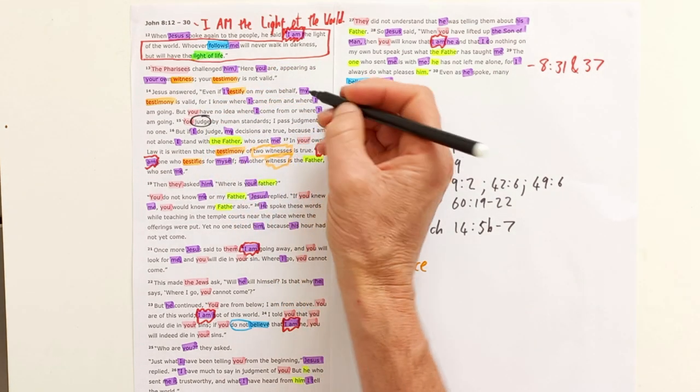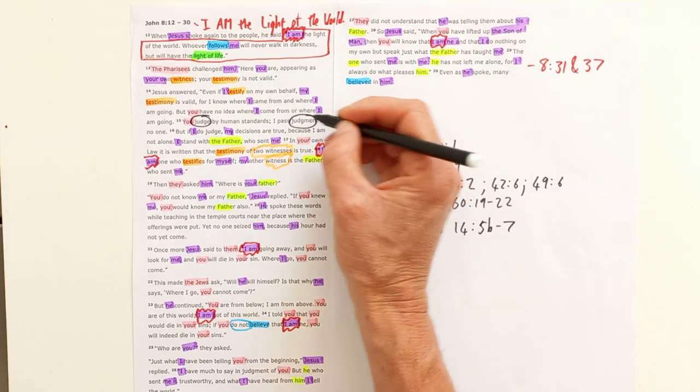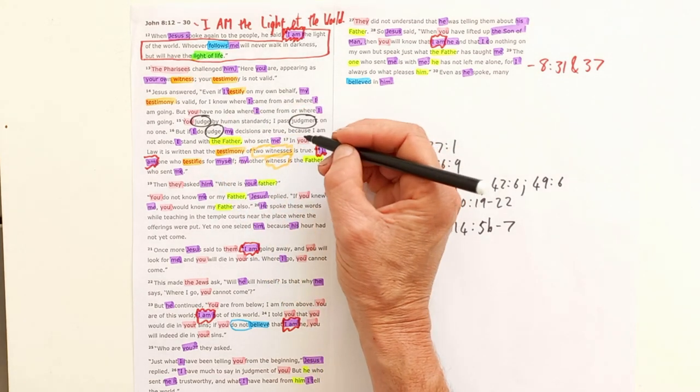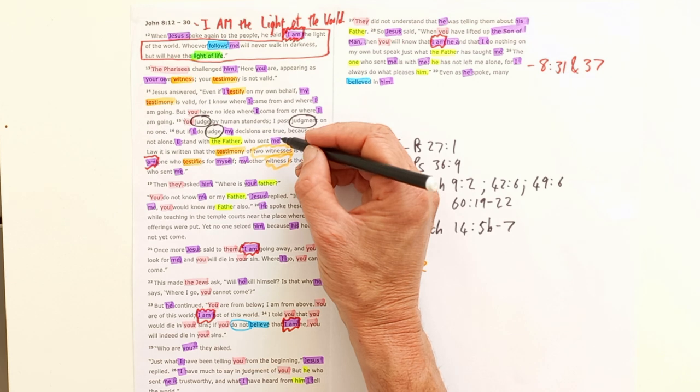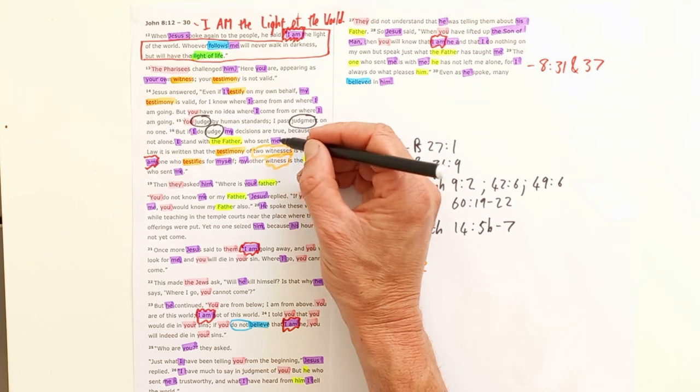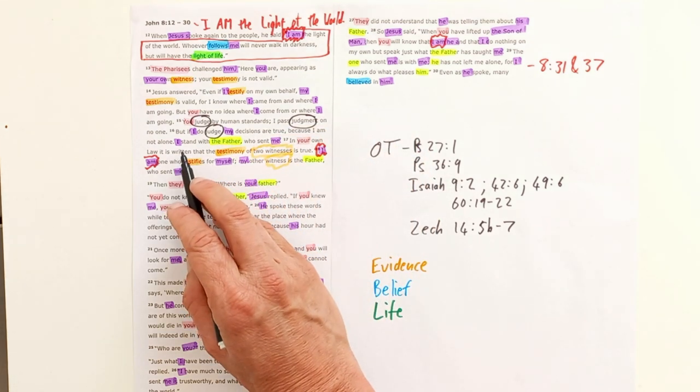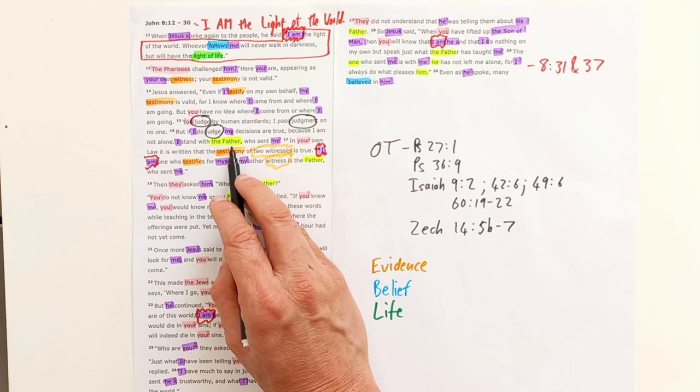Jesus says that he passes judgment on no one, but if he does judge, his decisions are true. And he says that he's not alone—the father is his other witness.